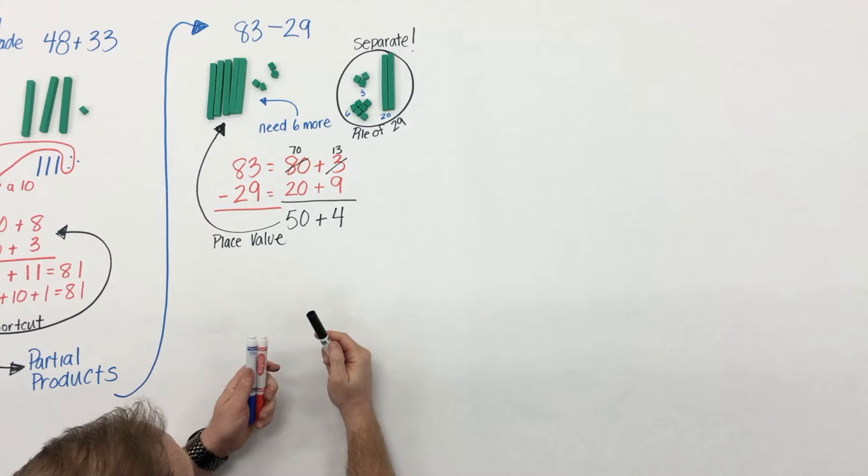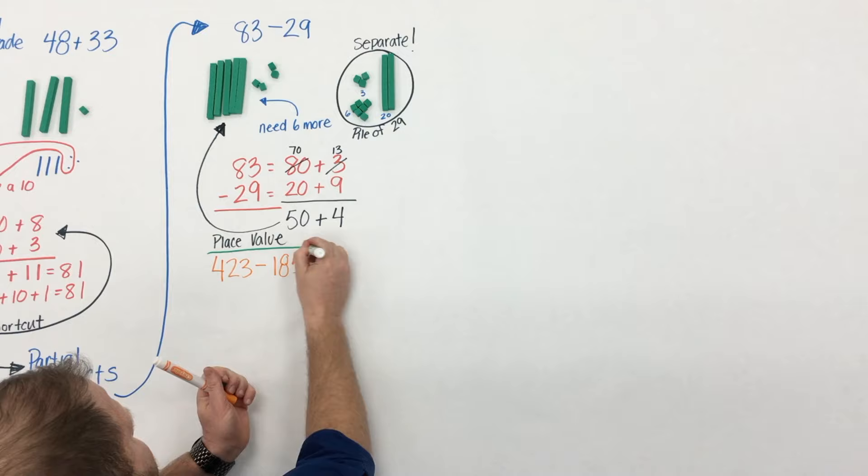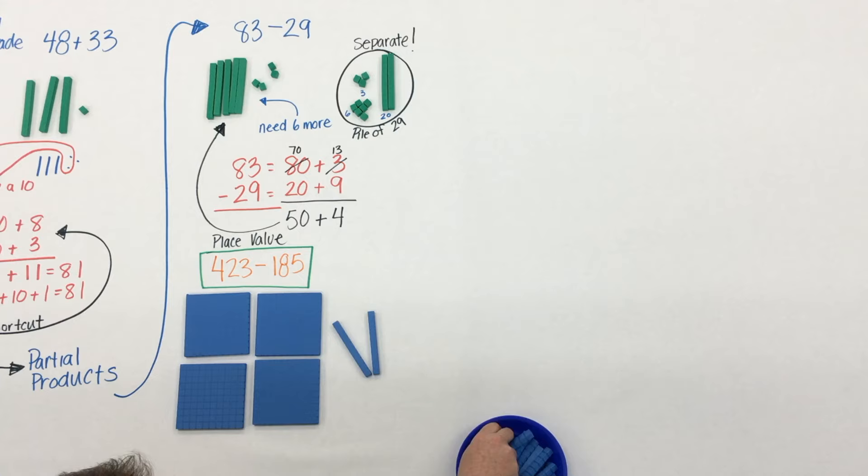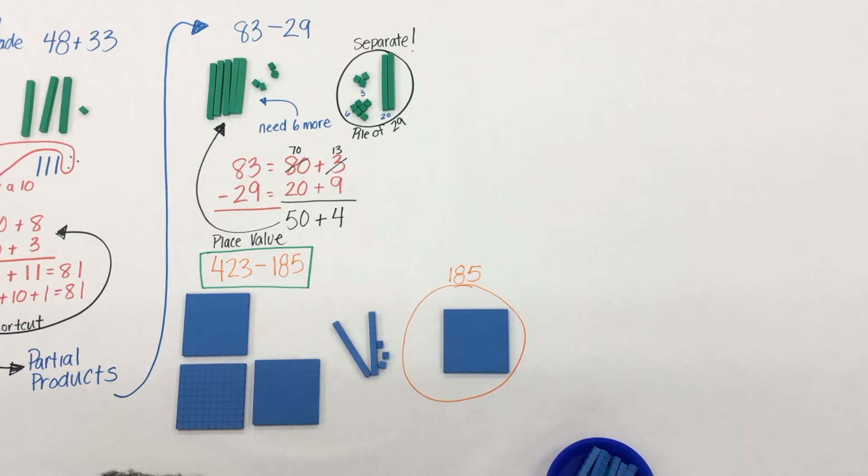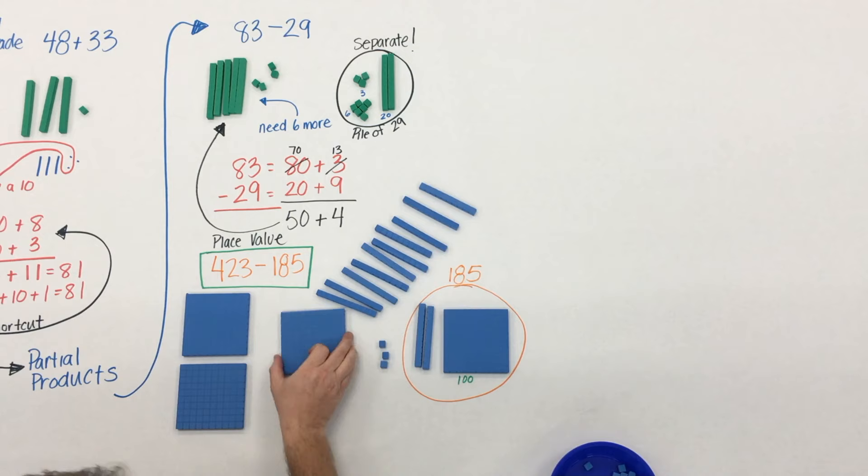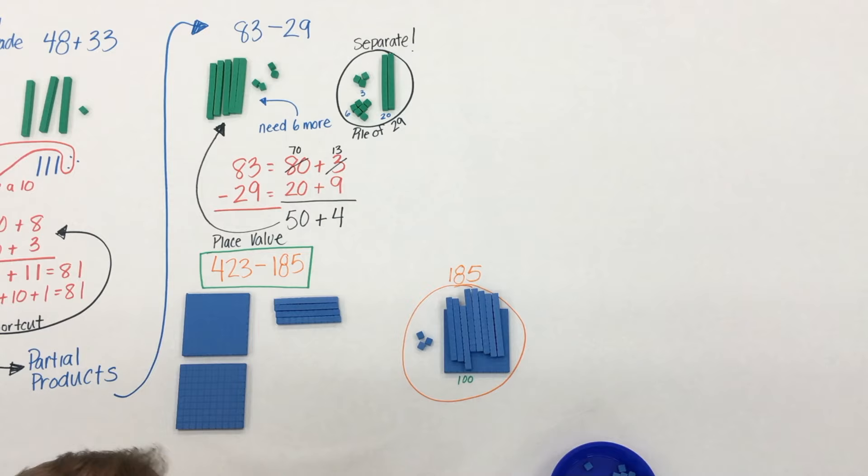Everything that we're doing here and all the work that we're doing we're not undermining place value. And what's great is that this model, this understanding that we're building, well it also applies to larger numbers as well. Now we can use place value mats, we can use just open sheets of paper such as this, but anyway students are still acting out that fair trade and they're making sense, the regrouping of numbers.